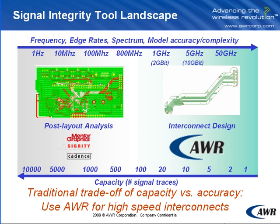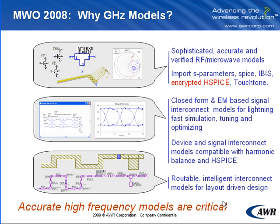For problems above one gigahertz, as we discussed in part one, there are two major problems. One is the actual modeling of the interconnects, and the second part of the problem is the simulation of those interconnects, where we have signal content that could be well into the tens of gigahertz. The models and the simulators need to handle this broadband capability, and traditional signal integrity tools just don't cut it in this region.